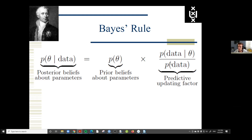The predictive updating factor tells us which accounts of the world predicted the data relatively well. If conditioning on a particular state of the world makes you predict the data better — makes the data less surprising — then this predictive updating factor is larger than one and that state of the world gains credibility. But if conditioning on that state of the world makes the data more surprising, then the predictive updating factor will be smaller than one, meaning credibility decreases.